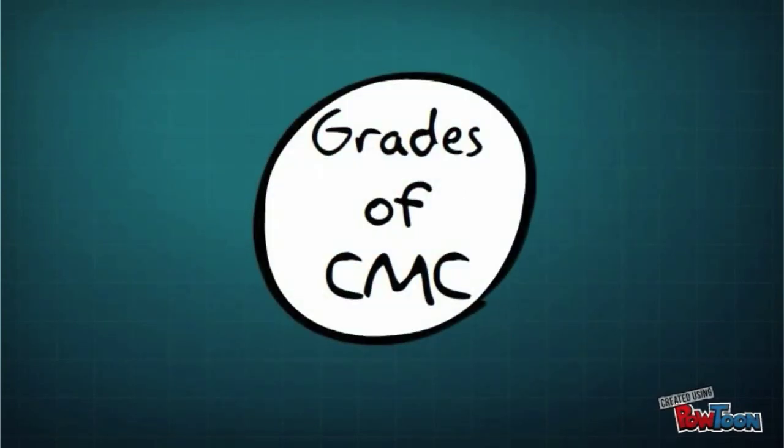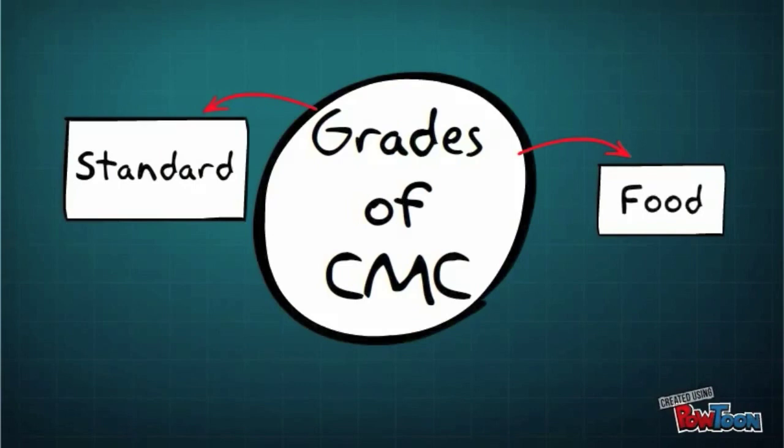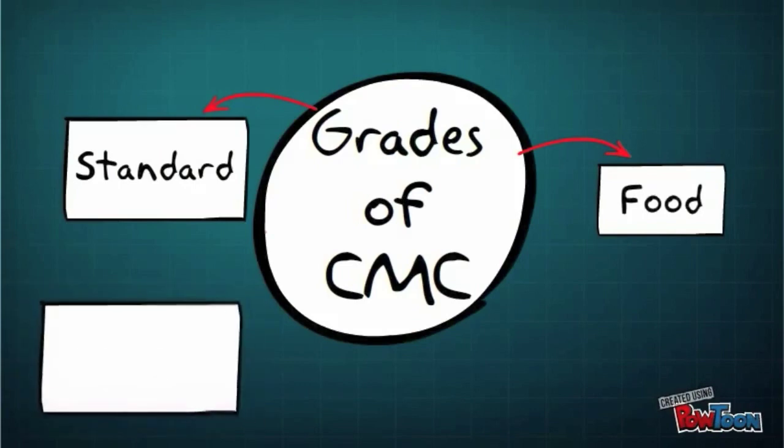CMC is produced in different grades to suit its various uses. These are standard grade for industrial uses, food grade for food, cosmetic, and pharmaceutical uses, and pharmaceutical grade for cosmetic and pharmaceutical uses.